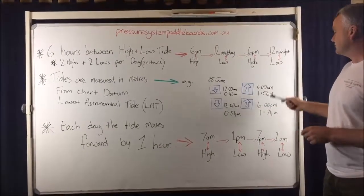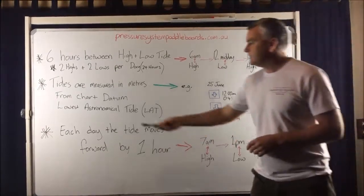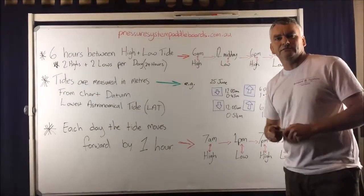So that's pretty simple. Let's just grab this figure here, this 1.56. That's 1.56 metres between the lowest astronomical tide level or chart datum. So that's pretty simple.